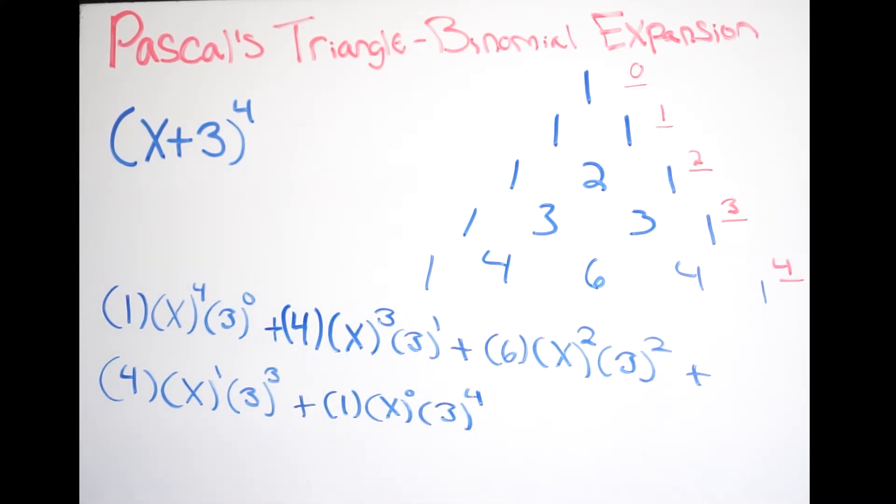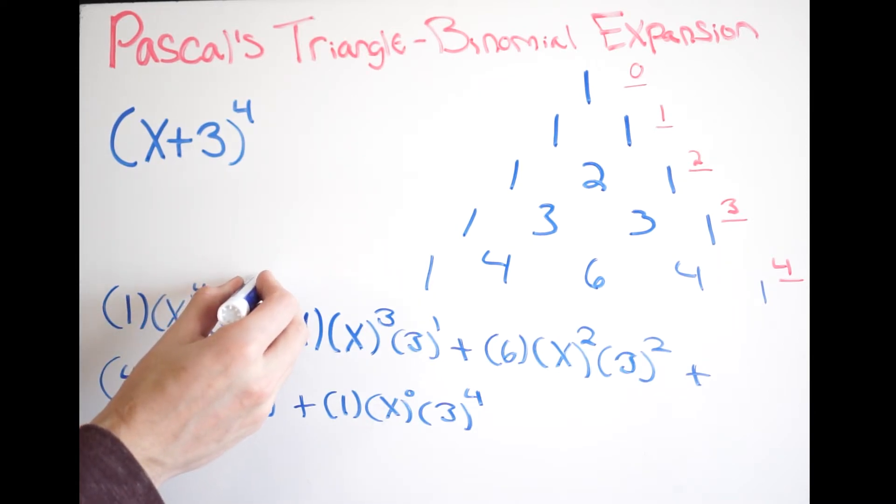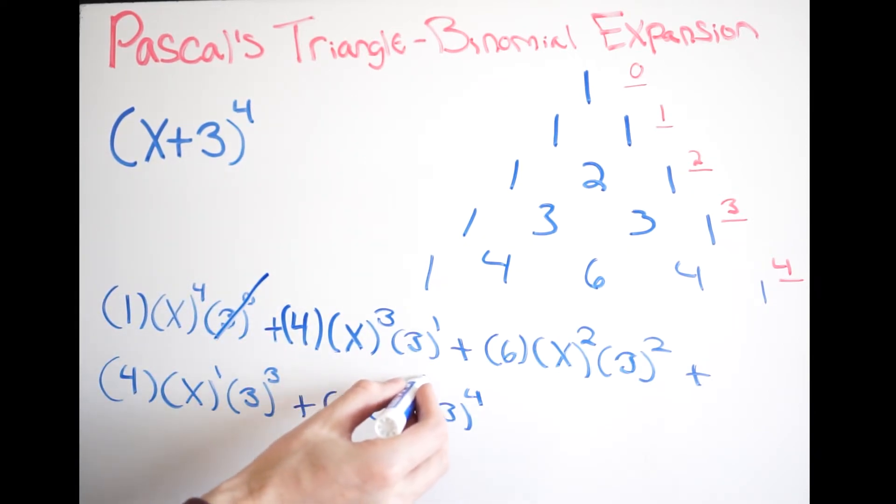So there we are. And now we're simply just going to simplify this down. We know that anything to the zero power is just one. So we can essentially just cancel this out. We can also cancel this one out. And then let's just go from here. This is just going to be x to the fourth. So we should do this in a different color. We're going to get x to the fourth power.